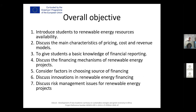The overall objective of the module can be looked at in seven key points. Number one is to introduce students to renewable energy resource availability. Then to discuss the main characteristics of pricing, cost, and revenue models — the principles of financial modeling that rotate around price, cost, and revenue. Then to give students basic knowledge on financial reporting, because you need information to make financial decisions.